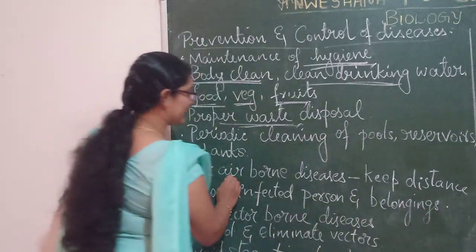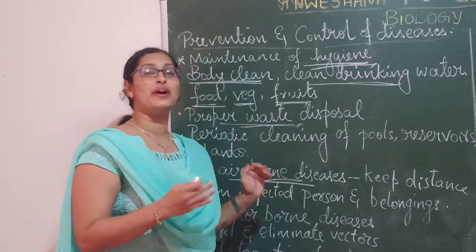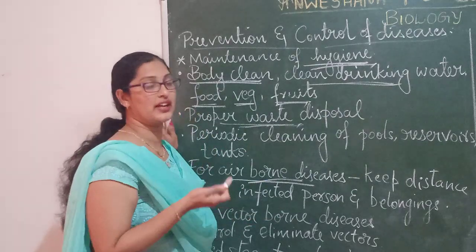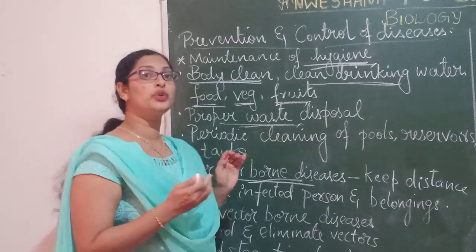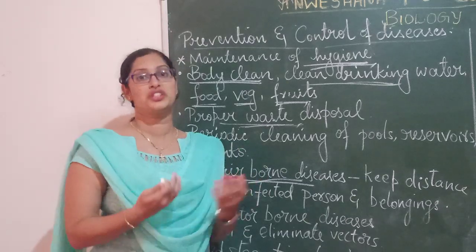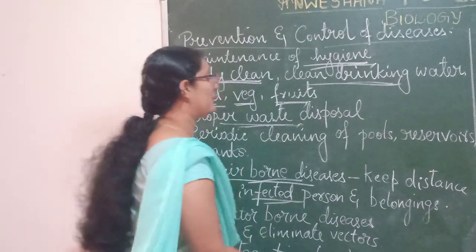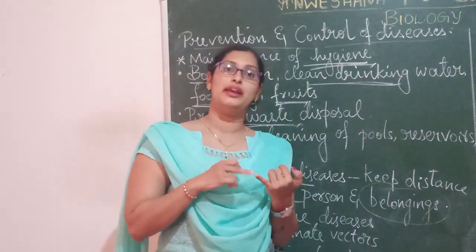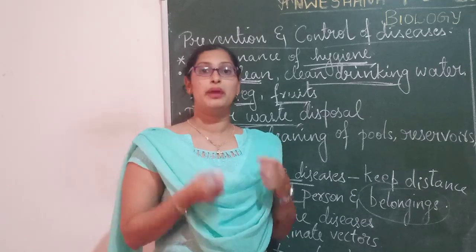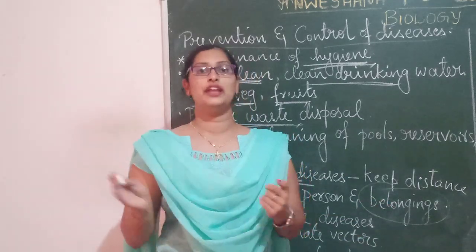Next, for airborne diseases, keep distance from the infected person and his belongings. Airborne diseases are the ones which spread through coughing, sneezing, or liquid droplets transmitted through the air. If you know that a person is infected, you will have to keep a distance — social distancing is very much important to safeguard oneself. Not only the infected person but also his belongings: clothes, comb, razor machines, utensils, doorknobs, mobile phones — you should not use the belongings of the infected person.